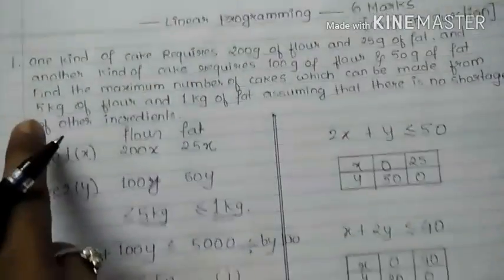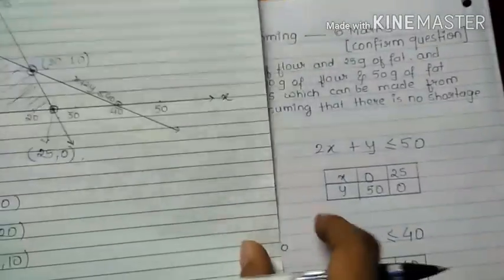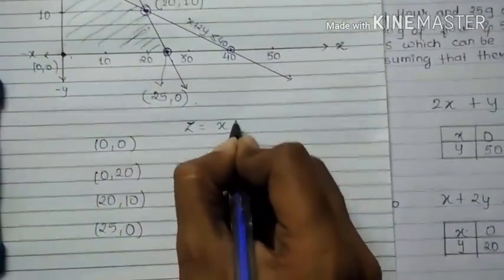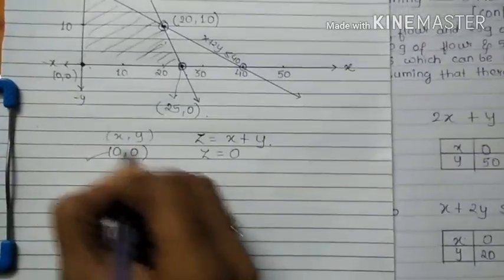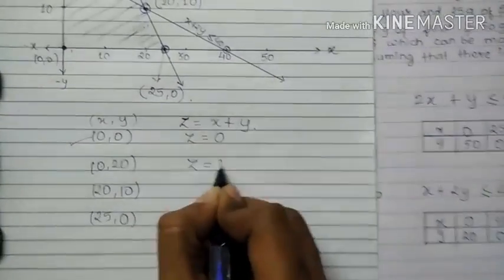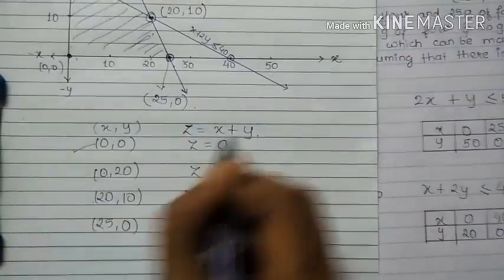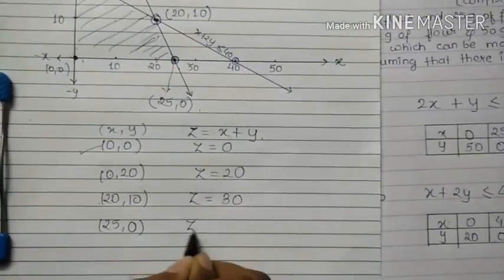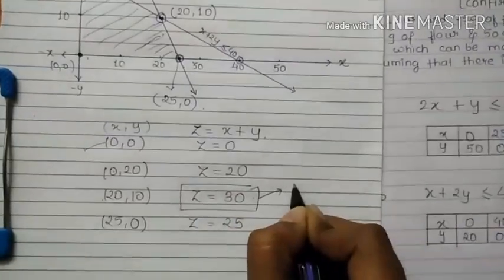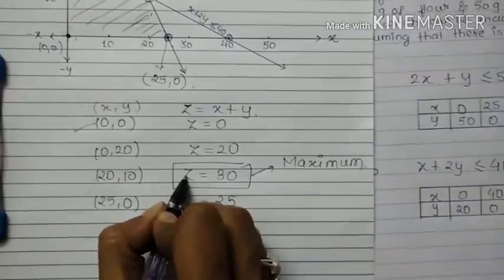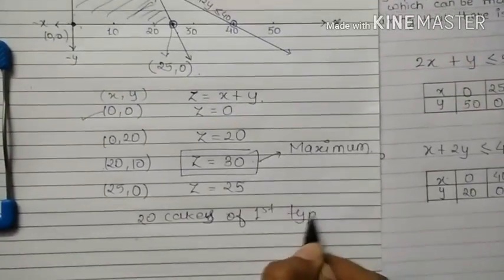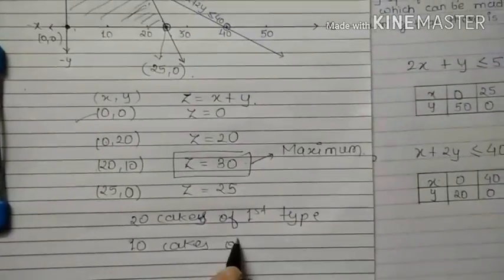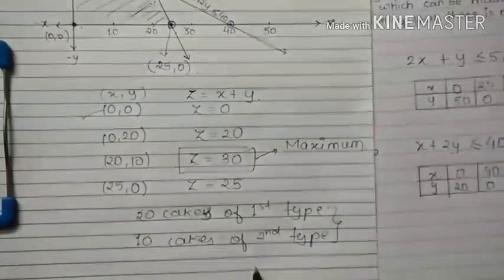Now I have to calculate the objective function. The question asks for the maximum number of cakes, so z = x + y. At (0, 0): z = 0. At (0, 20): z = 20. At (20, 10): z = 30. At (25, 0): z = 25. The maximum value is 30, achieved by making 20 cakes of the first type and 10 cakes of the second type.